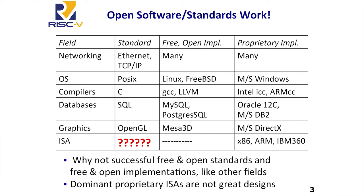Imagine if you had an IBM network, a Digital network, a Samsung network, a Huawei network, and they couldn't connect to each other. That would be a pretty bad state of the industry. Actually, at one point in time it was like that. But now Ethernet is the common thing that everybody uses. Ethernet is a standard. There are many, many implementations, both proprietary. But because it's an open standard, you can also have open source implementations of Ethernet.